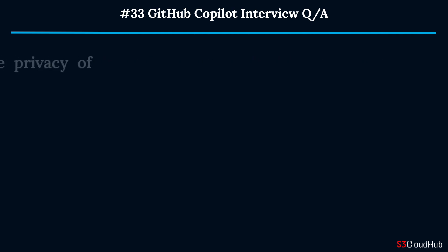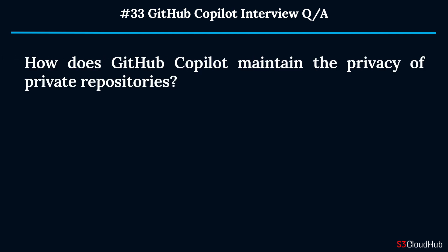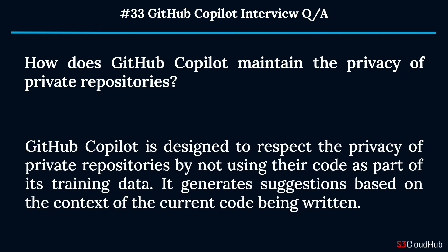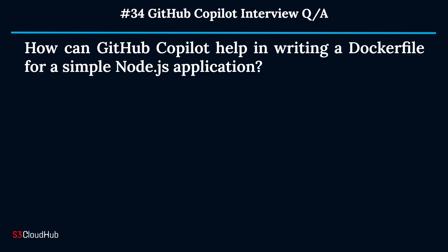Question thirty-three: How does GitHub Copilot maintain the privacy of private repositories? GitHub Copilot is designed to respect the privacy of private repositories by not using their code as part of its training data. It generates suggestions based on the context of the current code being written.